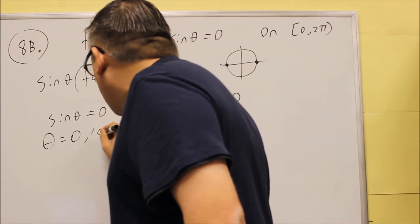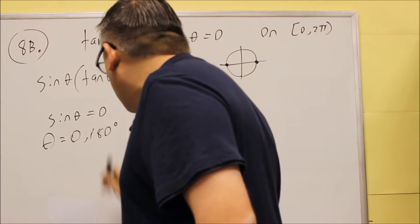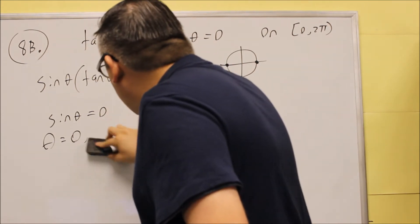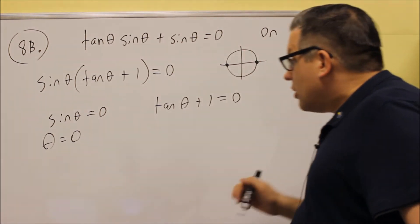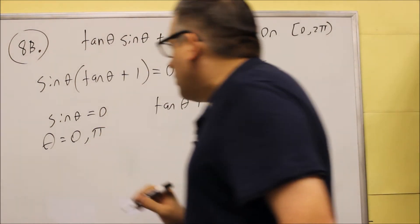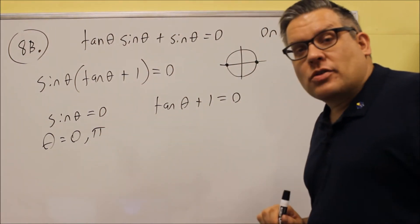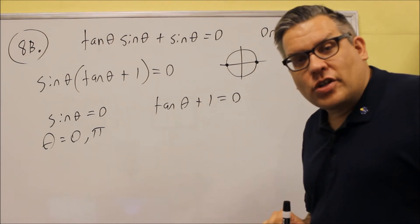0 and 180. So, 0, 180 will be, actually, we've got to use pi here because we've got to write our answer in radians. So, we'll put 0 radians and pi radians, and those are the two answers for the first equation.